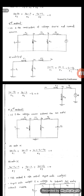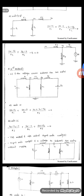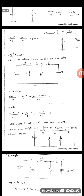In the third method, this is called super node analysis. Super node analysis involves a voltage source between two nodes without a resistor in between.